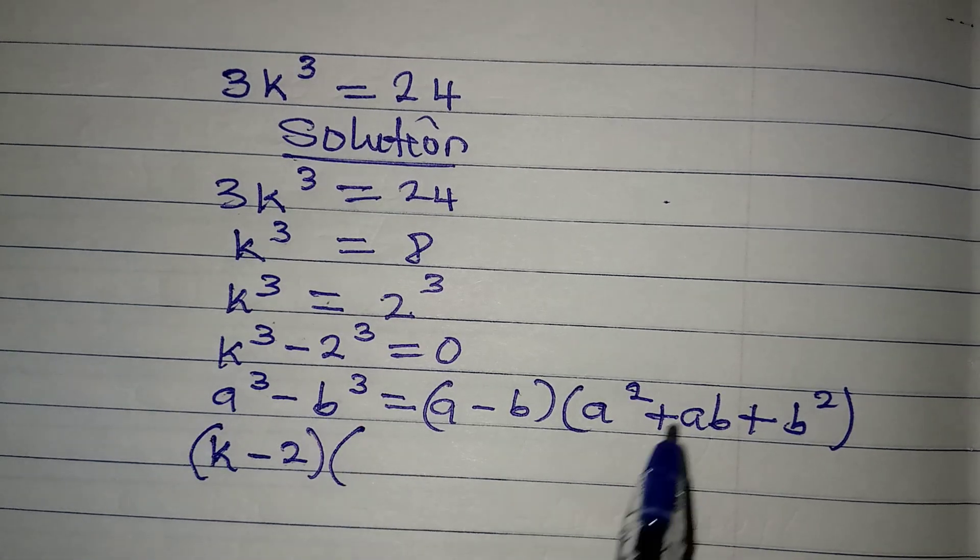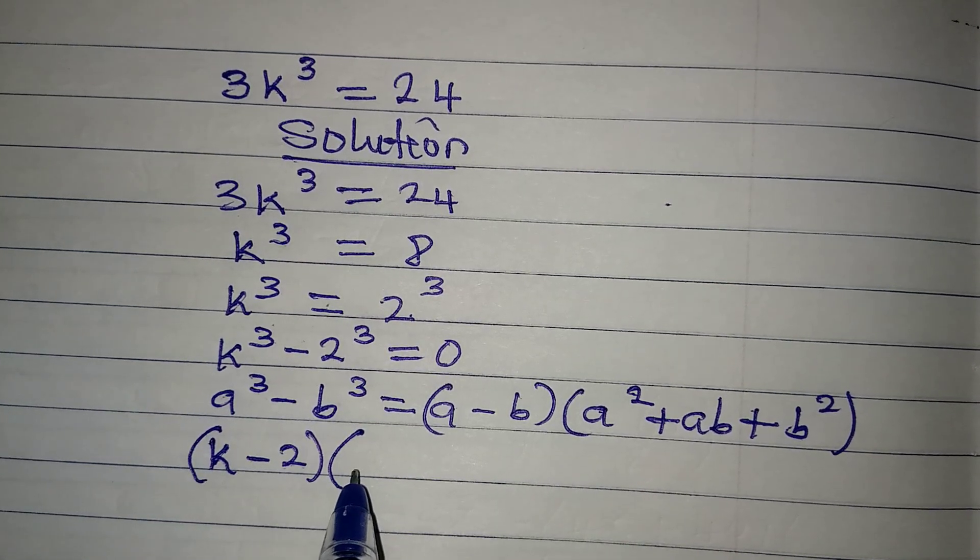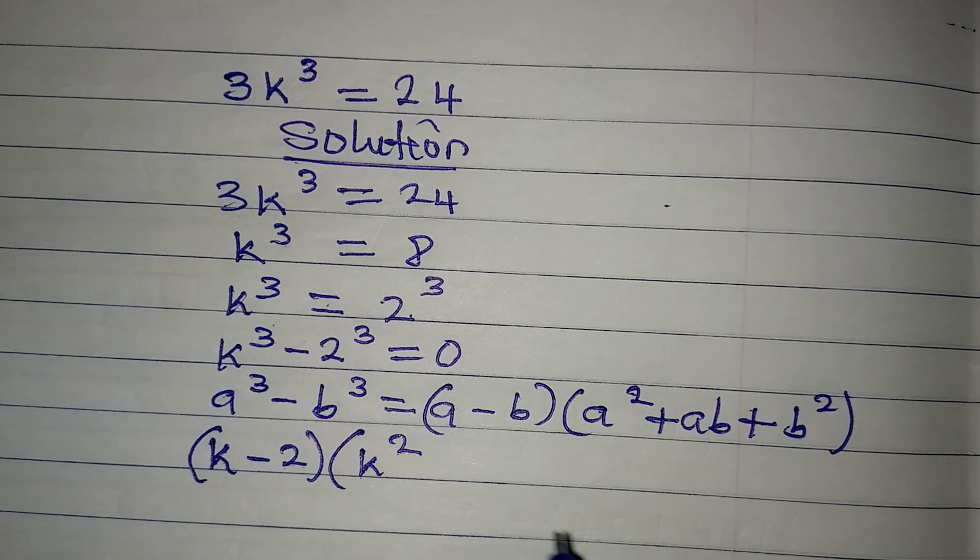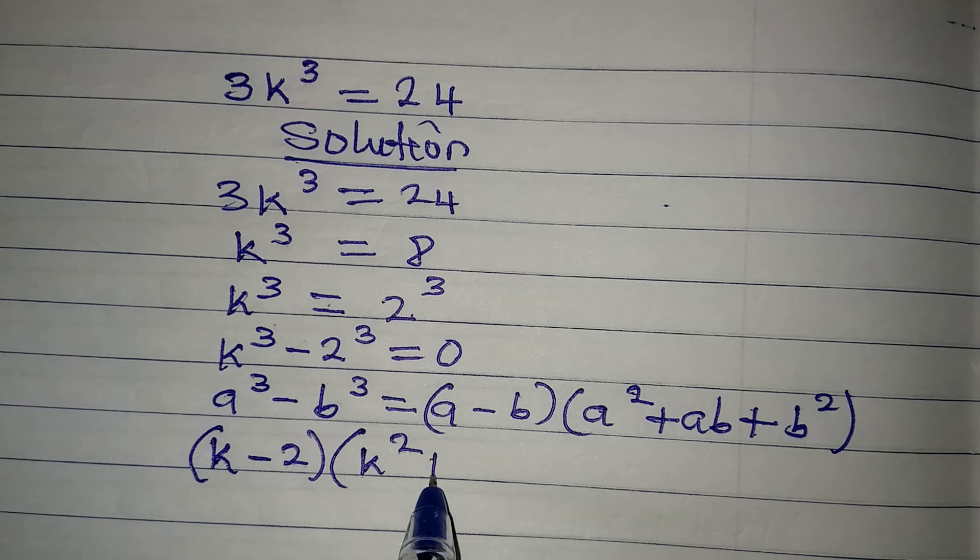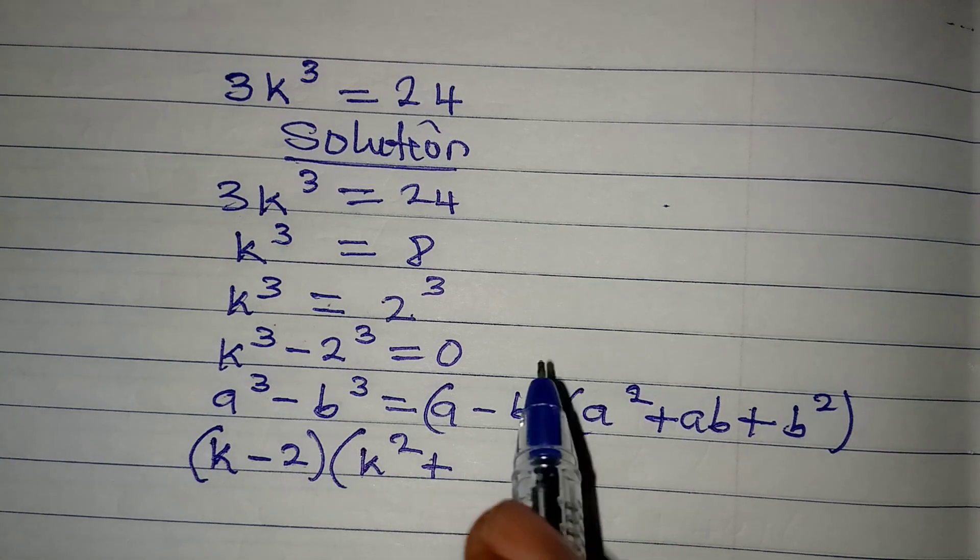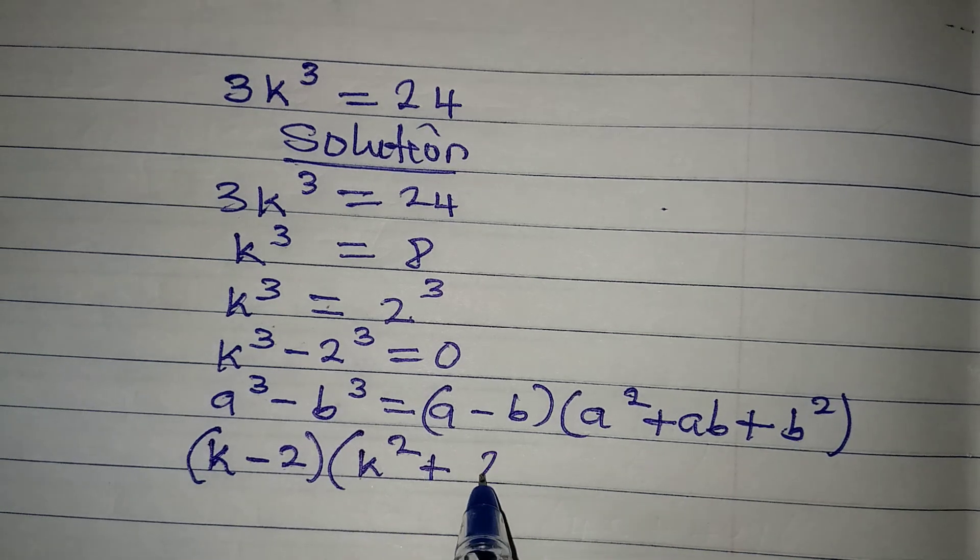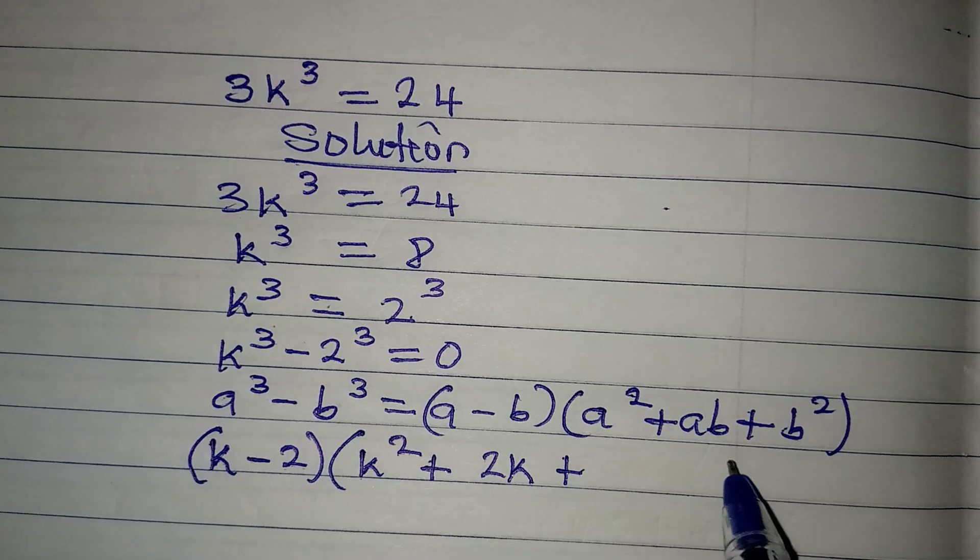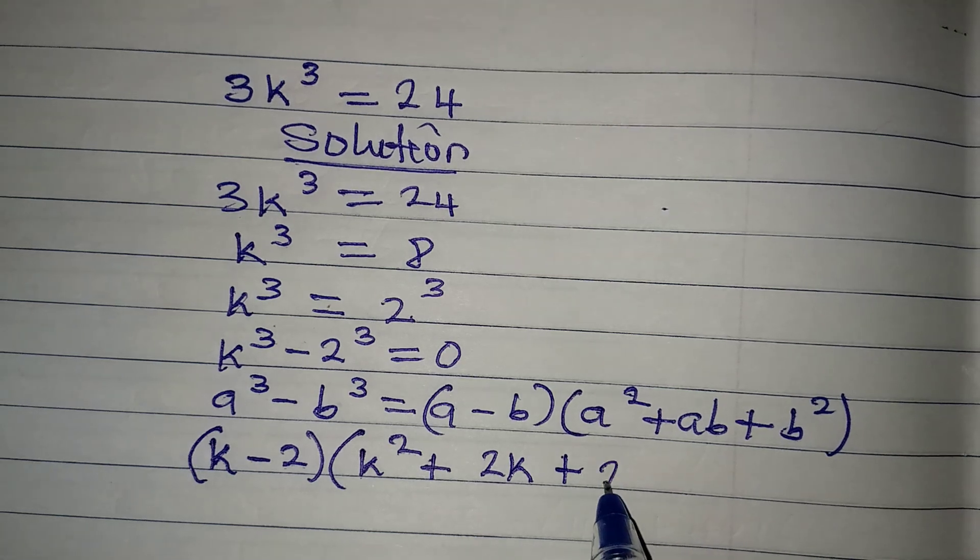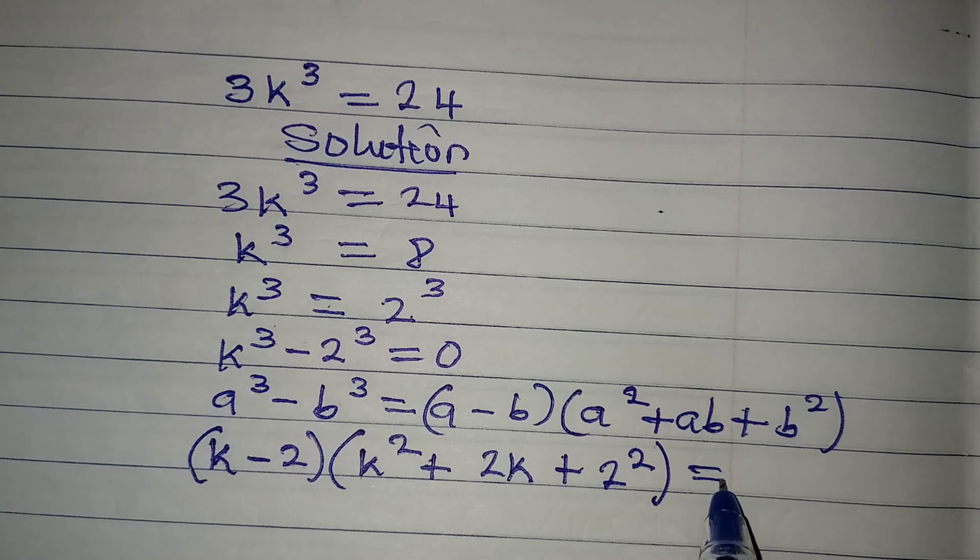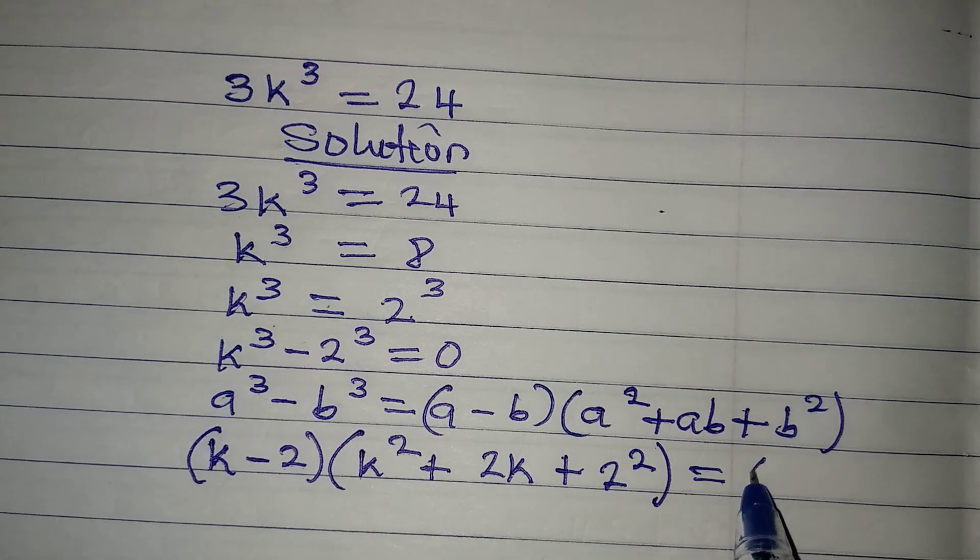And in the second bracket, our a² will now be k². That will be k². Then plus ab becomes k times 2, that will be 2k. Then plus b², that will be 2². Because our b is 2. Now the whole of this will be equal to 0.